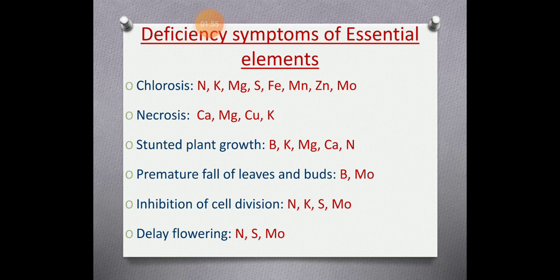If plants do not get a proper quantity of these elements, stunted growth occurs — meaning growth becomes highly condensed and the nodal and internodal regions become highly compressed. Especially boron and molybdenum deficiency causes premature fall of leaves and buds. In the case of groundnut (arachis), if boron is not available, pre-falling of the fruit also occurs.